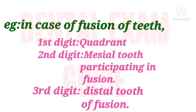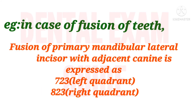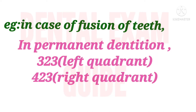For example, the fusion of the primary mandibular lateral incisor with the adjacent canine is expressed as 7-2-3, where 7 is the quadrant number, 2 is the mesial tooth participating in fusion (the lateral incisor), and 3 is the distal tooth participating in fusion (the canine). If a similar fusion is seen in the third quadrant of permanent dentition, the numbers used will be 3-2-3, where 3 is the quadrant, 2 is the mesial tooth, and 3 is the distal tooth participating in fusion.